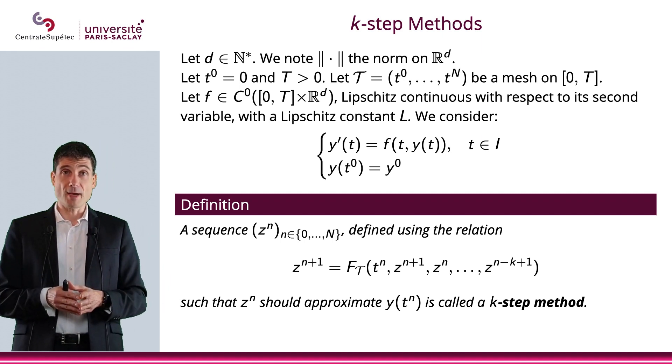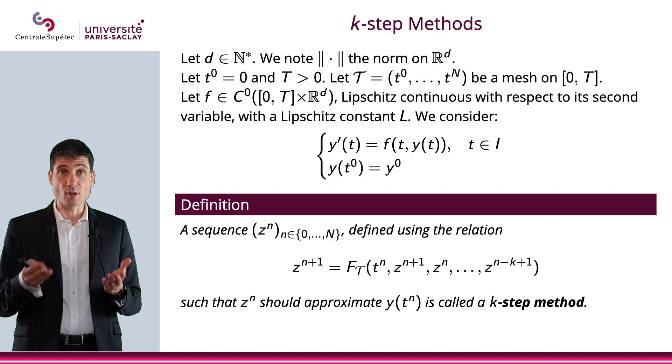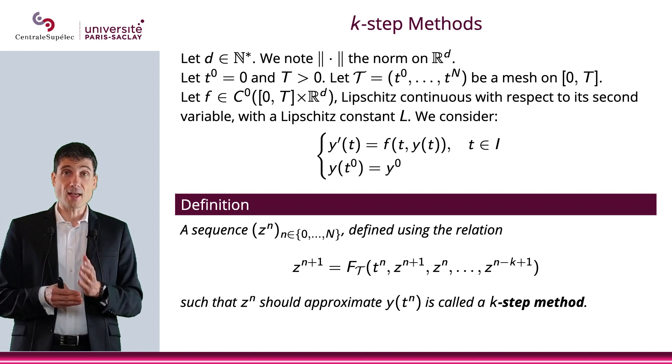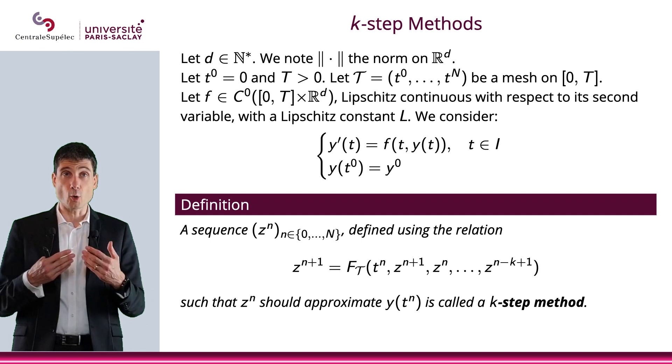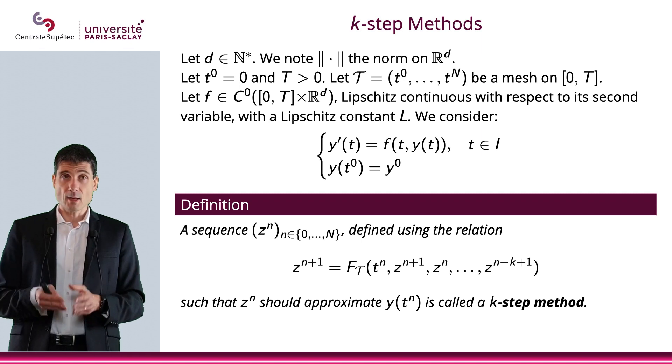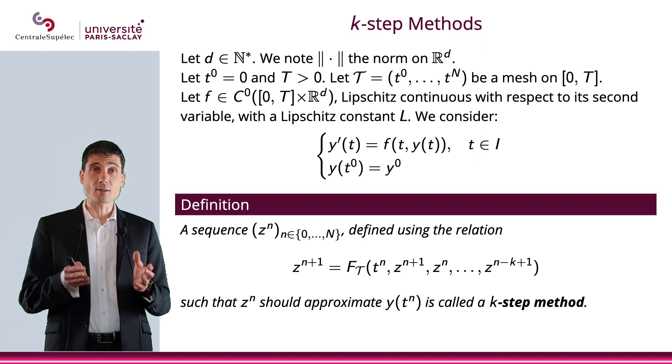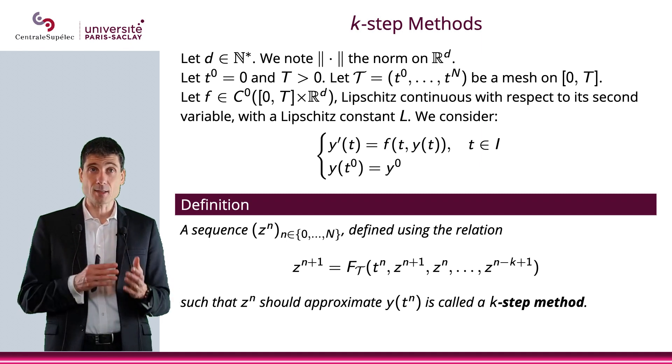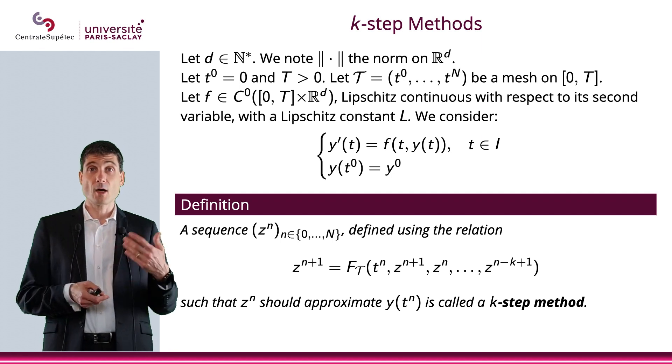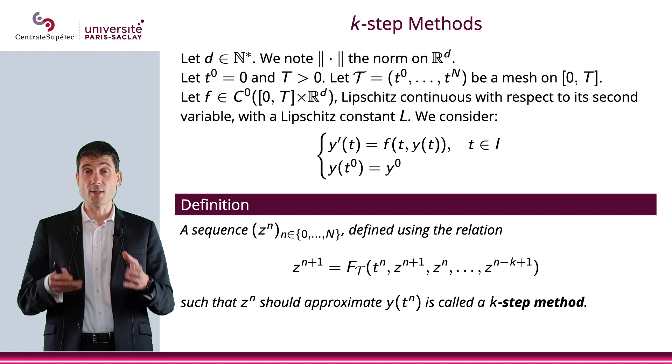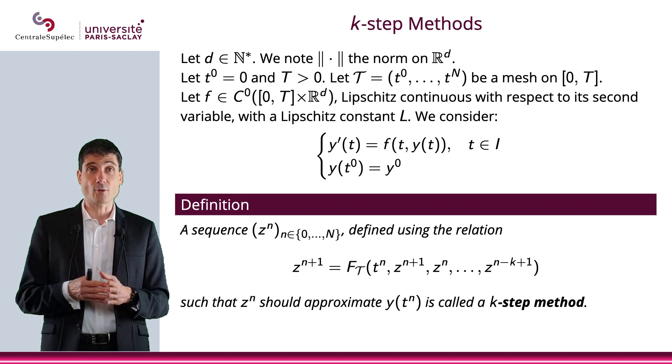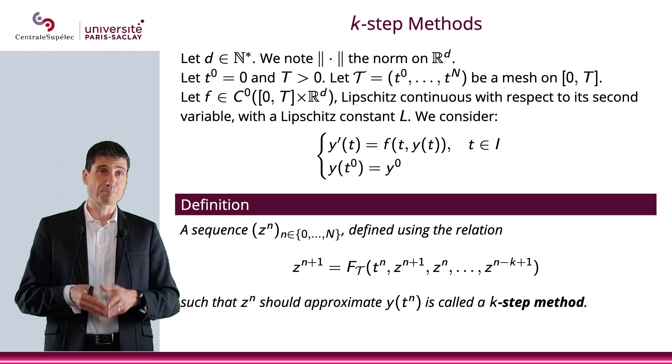We're going to consider a mesh (T^0,...,T^n) on [0, T]. The function f for our ODE will be Lipschitz continuous with respect to its second variable, with Lipschitz constant L independent of t. As we saw before, thanks to theorems from section 2 of this chapter, this ensures uniqueness and existence, provided f is also continuous in the first variable.